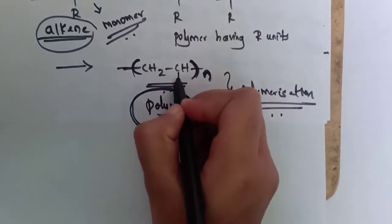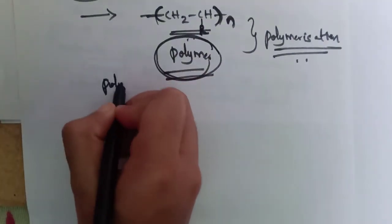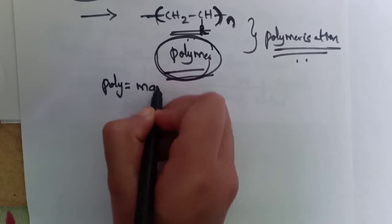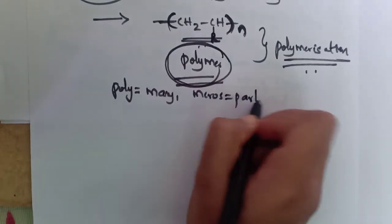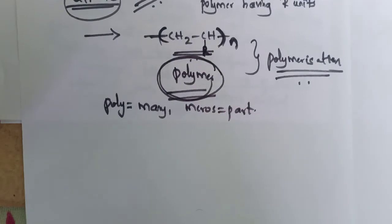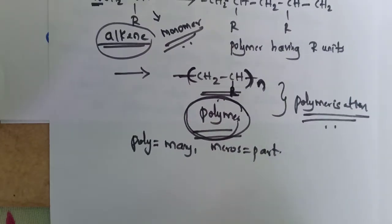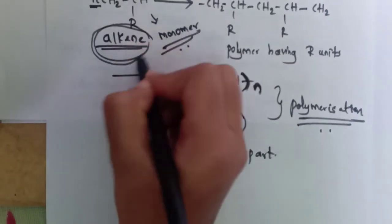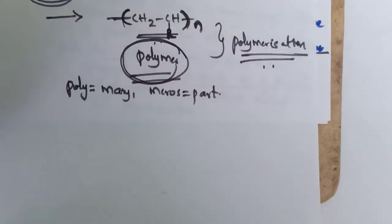The word 'poly' means many and 'mer' means part. The individual molecular unit which makes up a polymer is known as a monomer. A single alkene is a monomer and the product is called a polymer. Now we will learn polymerization by taking some examples.